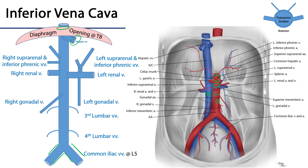There are typically three hepatic veins that move through the substance of the liver, and they drain into the inferior vena cava. Other tributaries of the IVC include the inferior phrenic veins, which drain the inferior portions of the diaphragm.